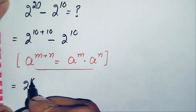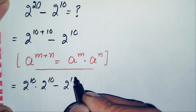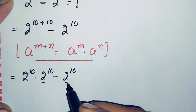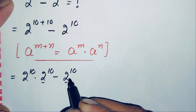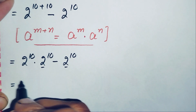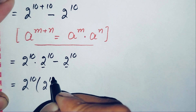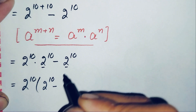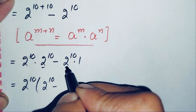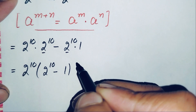Using this identity, the expression becomes 2 raised to power 10 times 2 raised to power 10, minus 2 raised to power 10. Now looking at both terms, 2 raised to power 10 is common in both, so let us take out 2 raised to power 10 as a common factor. As we know, 1 is the multiplicative identity, so after factoring out 2 raised to power 10, only 1 remains in the second term.